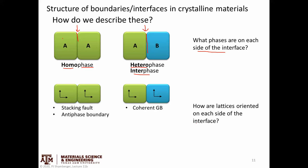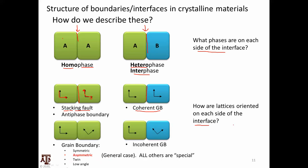The next question is how are the lattices oriented on each side of the interface. If the lattice vectors are basically lined up and continuous across the interface, pointing in the same direction on both sides, we could have defects like stacking faults or antiphase boundaries. If the lattice vectors are continuous and pointing in the same direction across a heterophase interface, I would call that a coherent grain boundary. If they're not pointing in the same direction across two different phases, that's called an incoherent grain boundary — meaning no special relationship between orientations on either side.